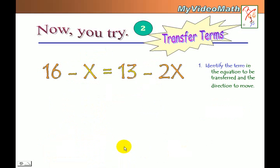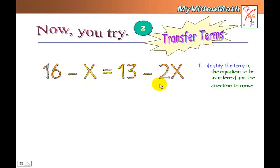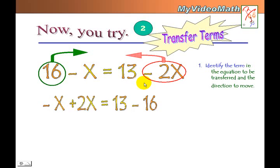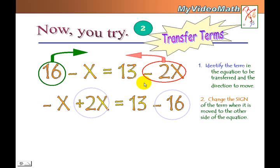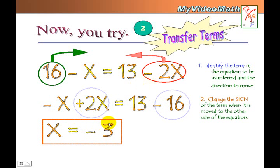Now you try this one. Remember, variables on both sides of the equation don't matter — all I have to do is identify the term I want to move and change the sign when I move it. I want to move negative 2x and 16, and when I combine them, I get x equals negative 3.